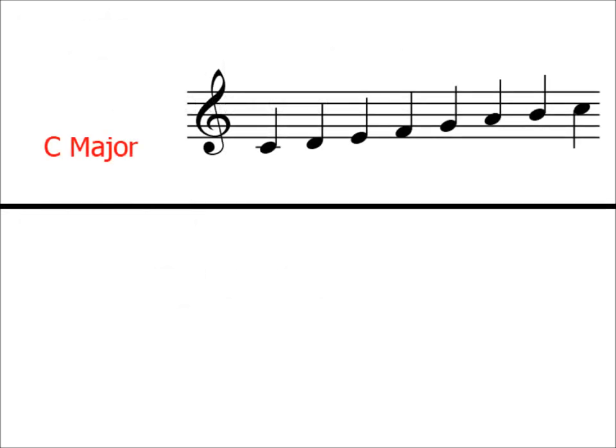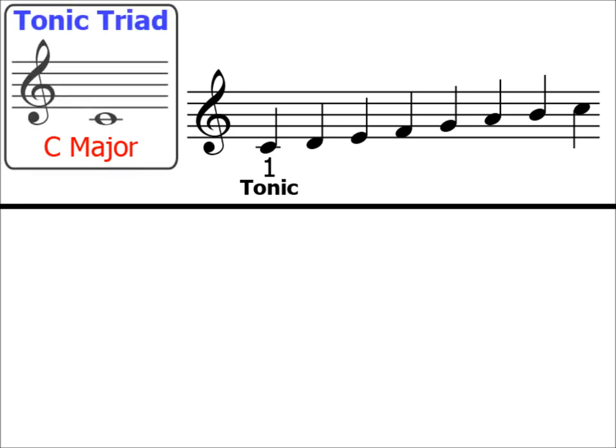Let's start by looking at C major. In any major scale — so not just C major — the first note is also known as the tonic. So the first thing about tonic triads is that they are based on the first note of the scale. Let's pop the first note or tonic note of C major over here. It's very common for chords to be written using semi-breves or whole notes.